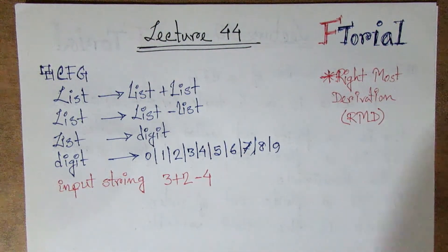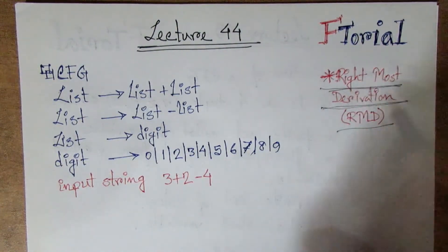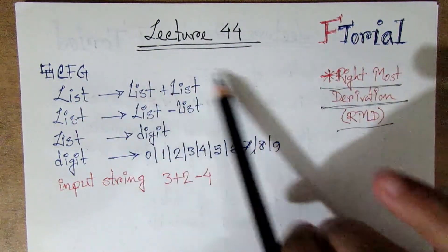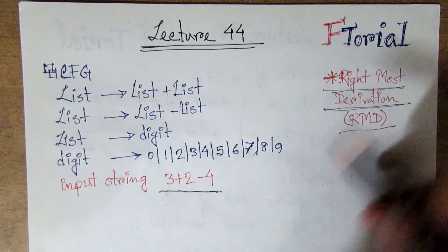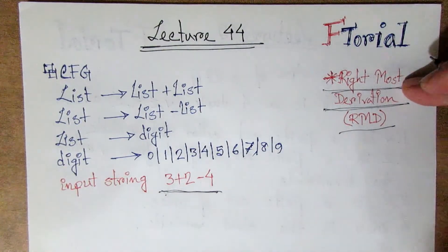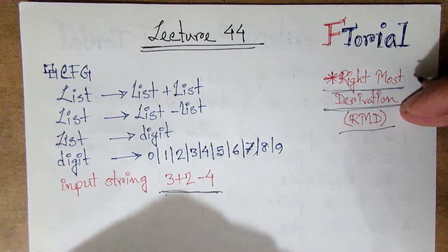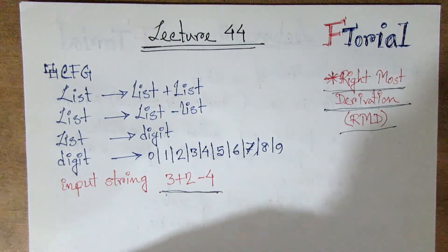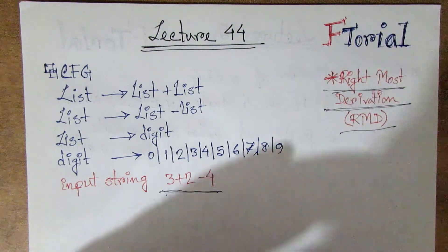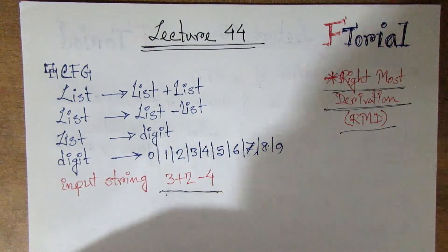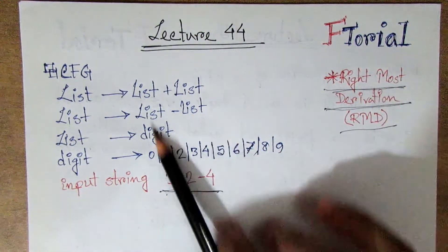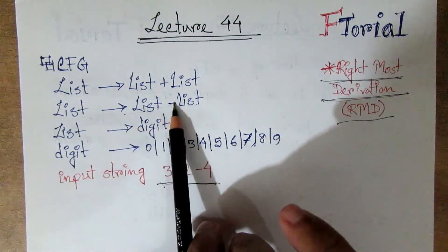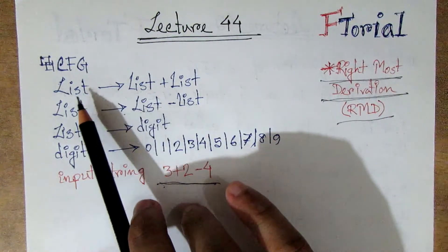Today's lecture is the rightmost derivation. This is the rightmost derivation, lecture 43. We have to start with the second grammar. The second rule is to start with the start variable list.